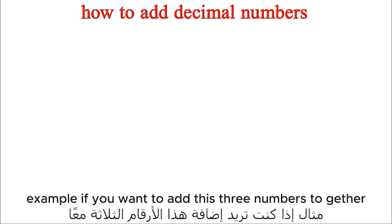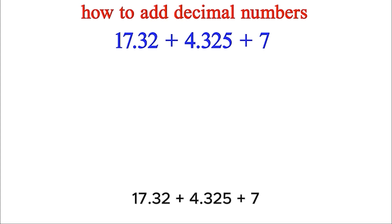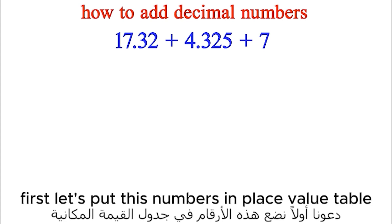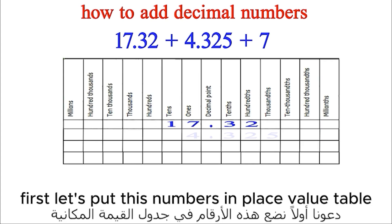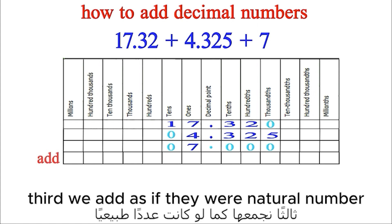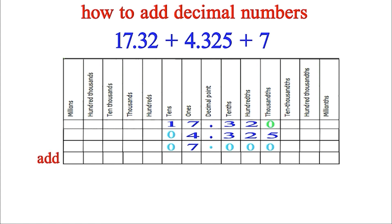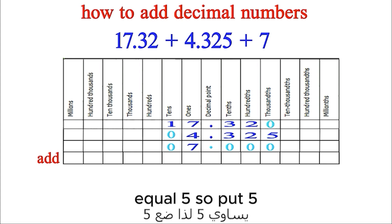Example: if you want to add these three numbers together: 17.32 plus 4.325 plus 7. First, let's put these numbers in a place value table. Second, put zeros in empty places. Third, we add as if they were natural numbers, starting from right to left. 0 plus 5 plus 0 equals 5, so put 5.